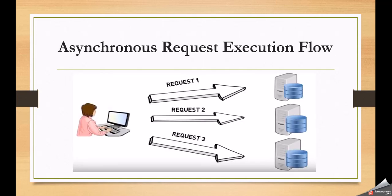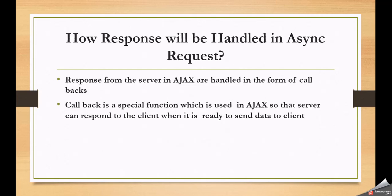When the client is sending multiple requests, how will responses be handled at the client side? When the client sends a request asynchronously, it will maintain callback functions to understand when the response is sent by the server. A callback is a special function used in Ajax so that the server can respond to the client when it is ready to send data. In the next slides, we are going to see what that callback function is and how to use them.